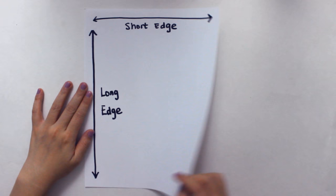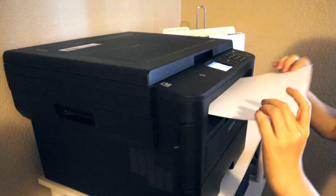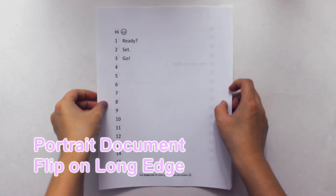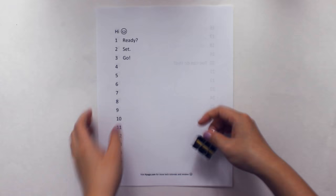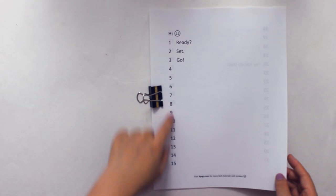Let's take a look at our portrait document. We will flip on the long edge, so I will place my paper clip here. This is what it looks like when we print using flip on long edge function.